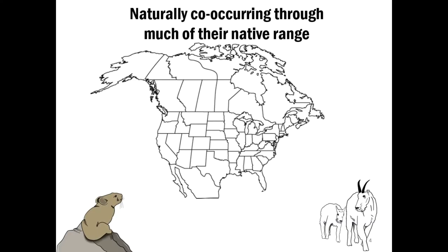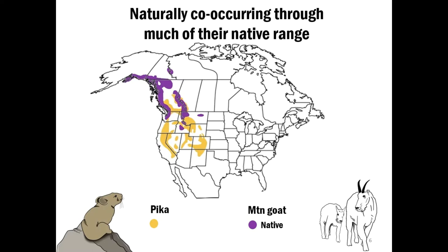To illustrate this co-occurrence, here we have a map of North America. If we overlay the pika's distribution, we can see that pikas start up in British Columbia, their populations come down into the U.S., and they go about as far south as the eastern Sierras or into northern New Mexico. The native range for the mountain goat overlaps a little bit with pikas in British Columbia, and they're also native to Washington, Idaho, and parts of Montana. So, like I said, they naturally co-occur in some areas.